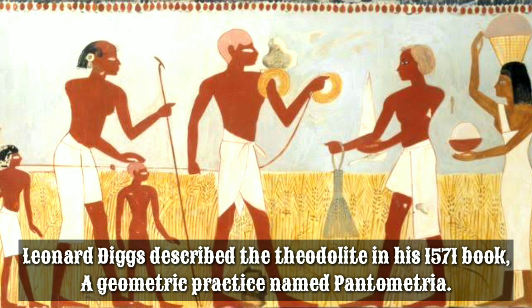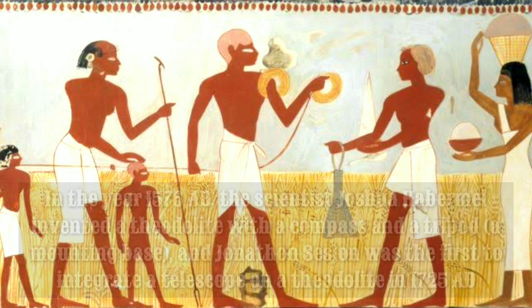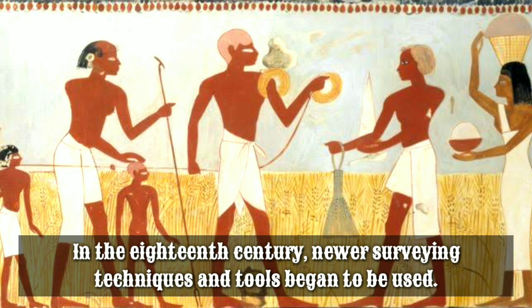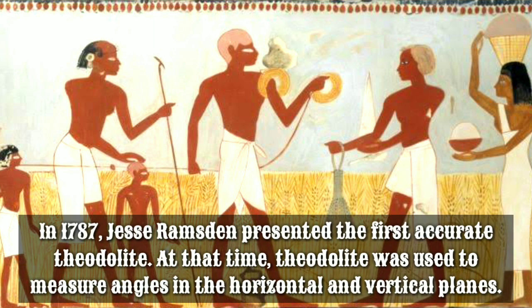In the year 1576 AD, the scientist Joshua Habermel invented a Theodolite with a compass and a tripod mounting base. Jonathan Sisson was the first to integrate a telescope on a Theodolite in 1725 AD. In the 18th century, newer surveying techniques and tools began to be used. In 1787, Jesse Ramsden presented the first accurate Theodolite, which was used to measure angles in the horizontal and vertical planes.